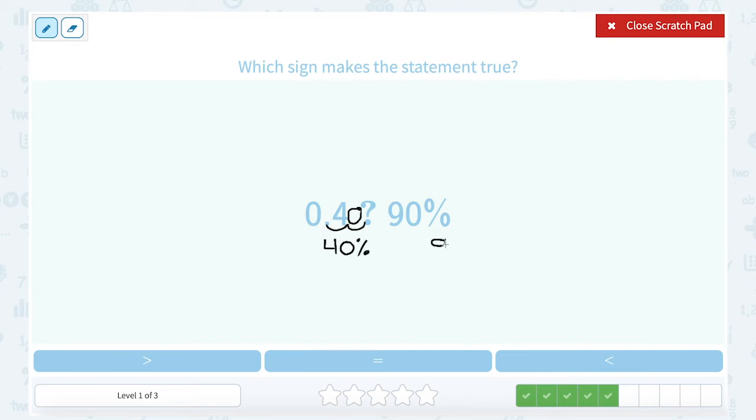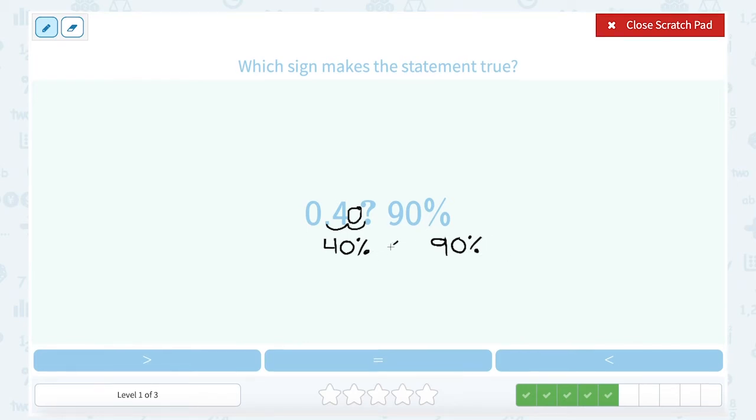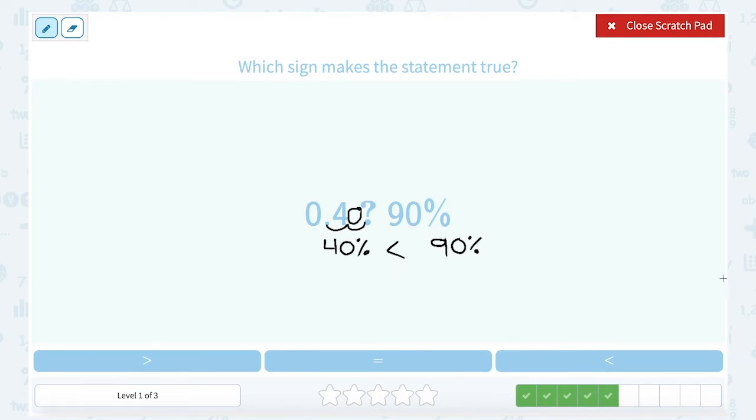And then I'm comparing 40% and 90%. Well, 40% is less than half. 90% is much more than half. It's almost the whole thing. So 40% is less than 90%.